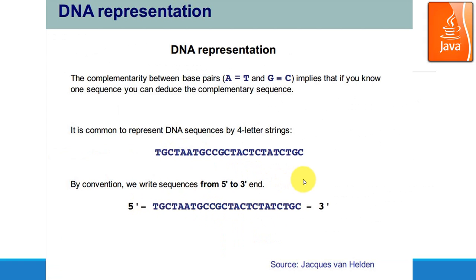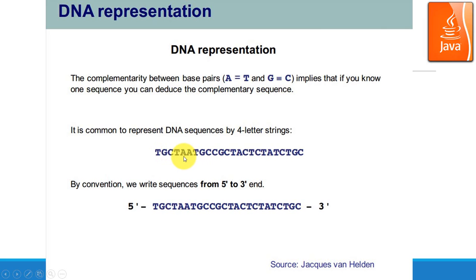Now we'll focus on DNA representation in computer simulation, as this is more related to our demo program. As mentioned, the molecule in the chromosome has four possibilities: A, T, C, G. Because of this nature, we can represent DNA in a computer simulation like Java using four-letter strings. Each character represents one molecule. At the beginning we put a five-prime and three-prime to be the direction indicator, representing a strand of DNA.